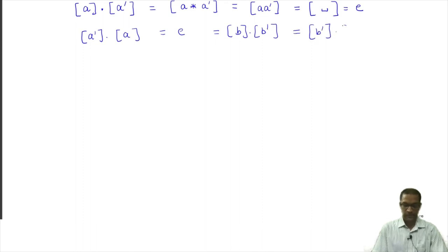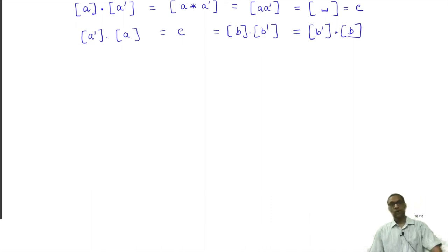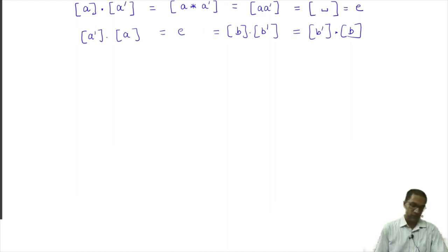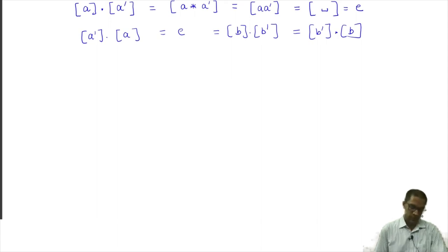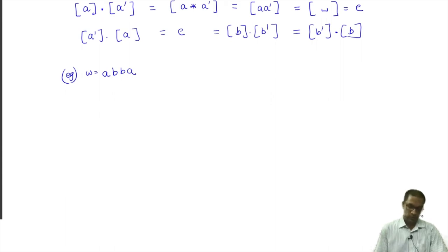So in other words, the equivalence class of A multiplied by the equivalence class of A' is in fact the identity element of this group. And of course in the other order as well, A' multiplied by A would also give you identity. You can also check that the same is true of B and B'. This is what I meant when I said in the beginning that A' and B' will eventually perform the roles of the inverses. That is — we have only constructed inverses for these special one-letter words. What about a general word? That is also very easy. Let us just do it by example and you will see the general picture very quickly. Suppose I take the word W equals ABBAA for example.